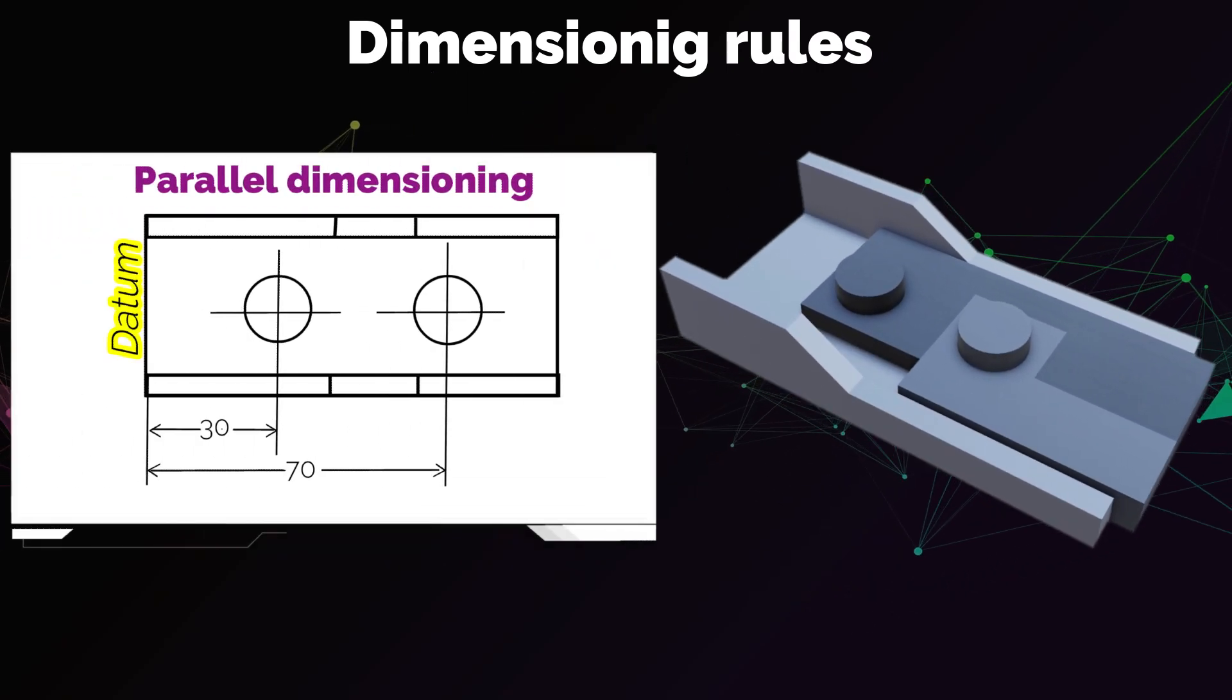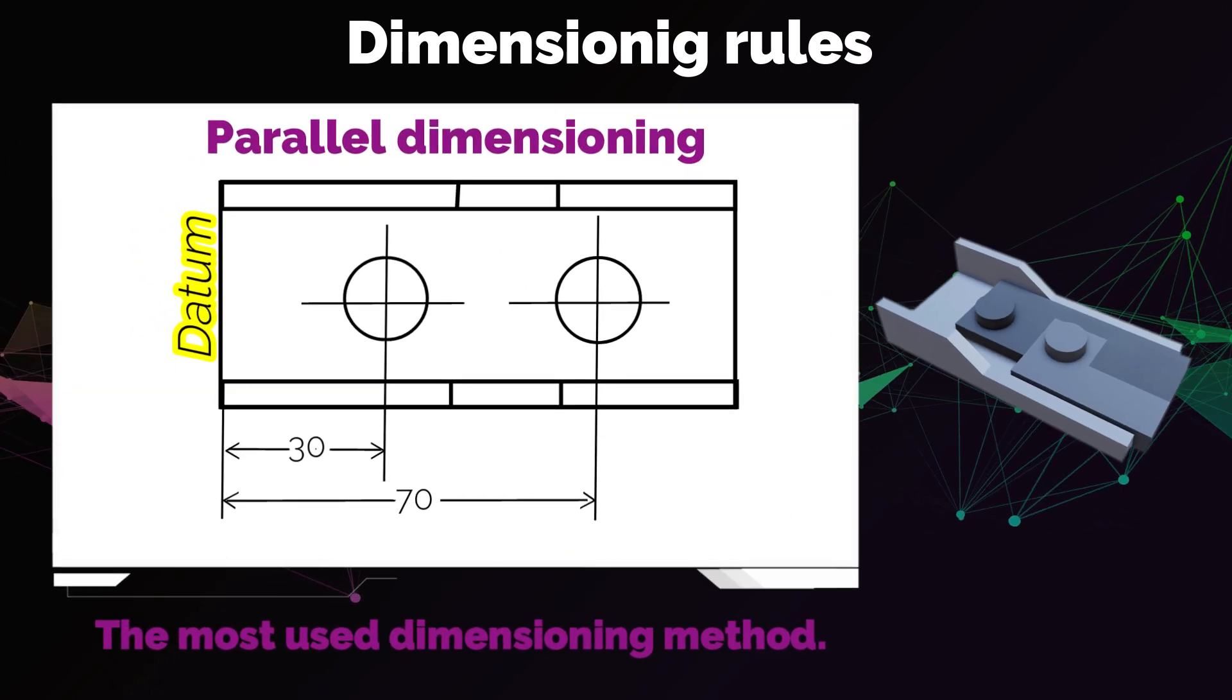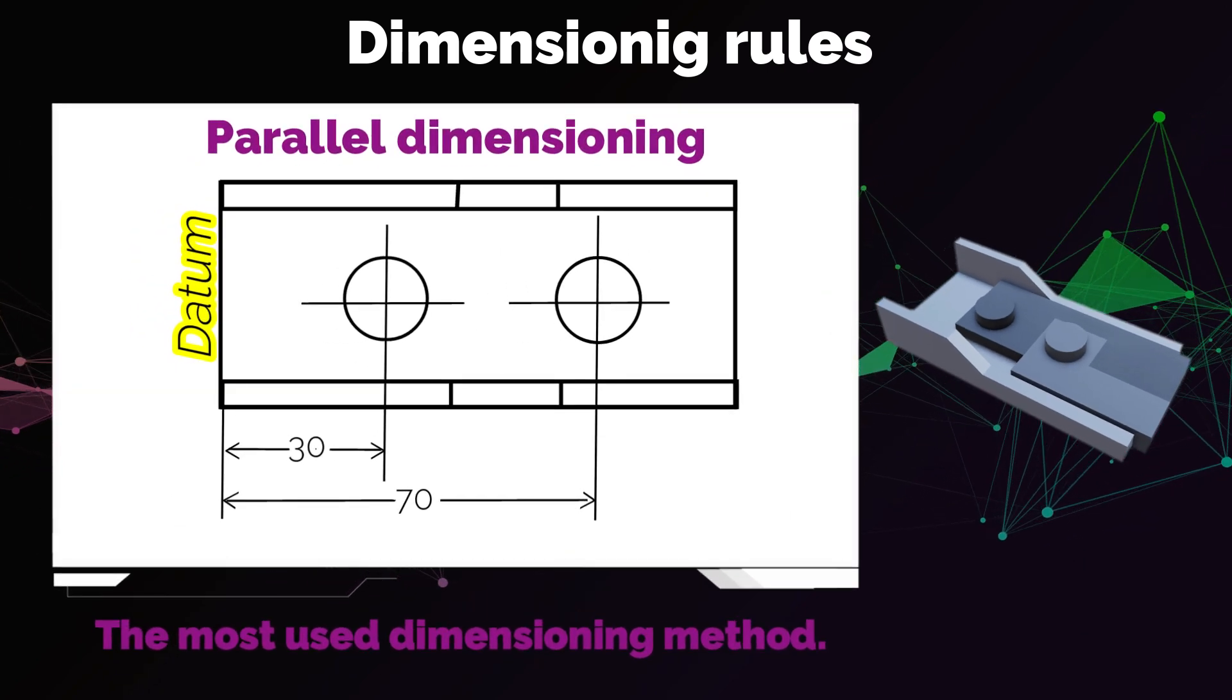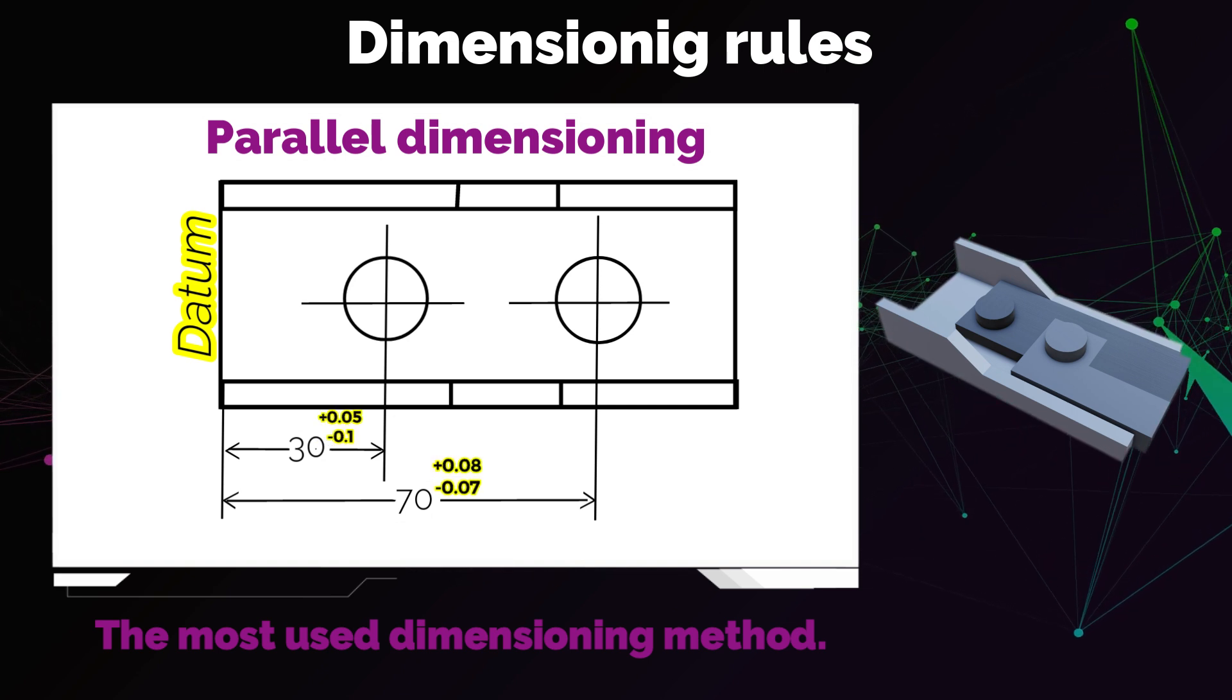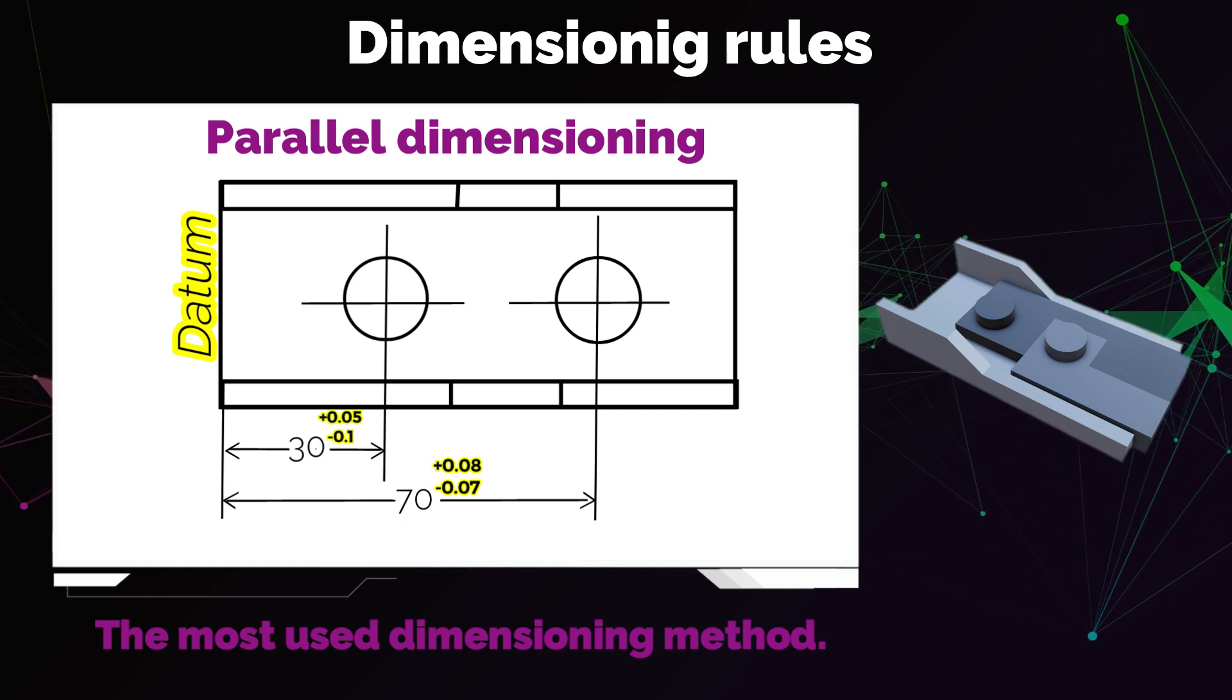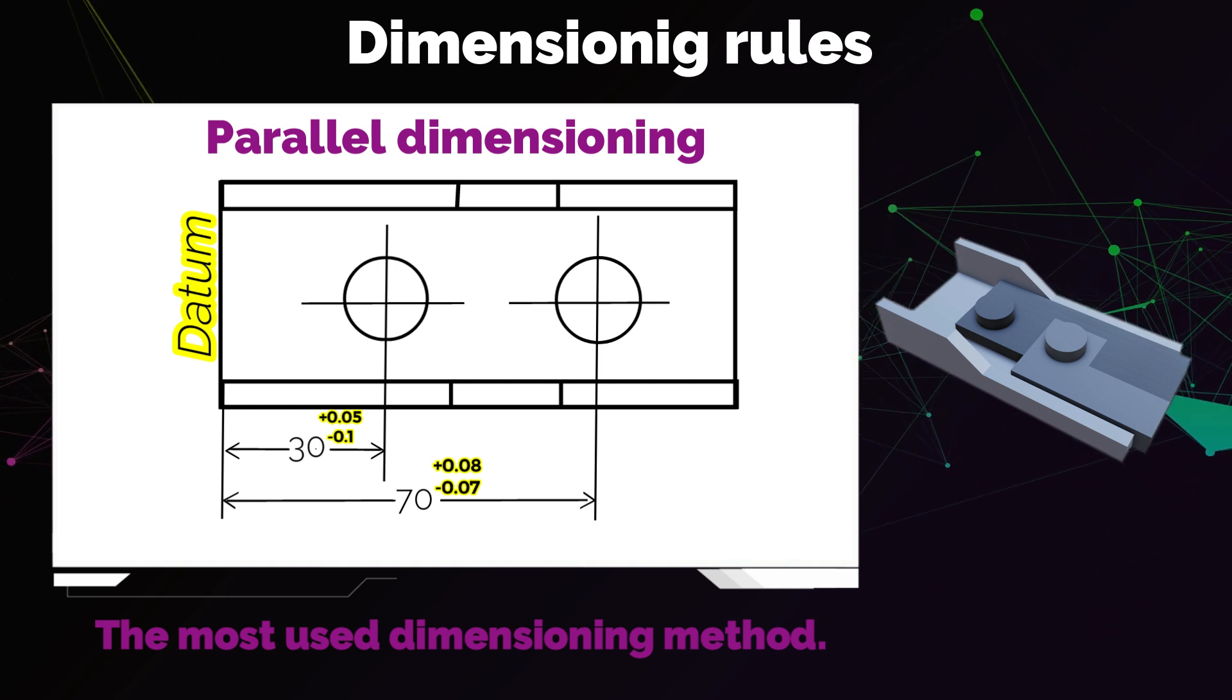Parallel dimensioning is the most used dimensioning method, and that is for a reason. When you dimension each feature directly to the datum feature that is important for the function, you can add a tolerance for each feature independent from the other one. And if a change is needed, you can change the position of the feature or the tolerances without having to worry about affecting the other features.